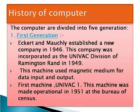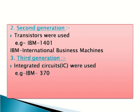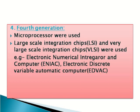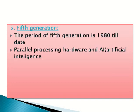History of computer. The history of computer is divided into five generations. In first generation computers, magnetic medium were used for data input and output, and punch cards were used as memory. In second generation, transistors were used. In third generation, integrated circuits or ICs were used. In fourth generation, microprocessors were used. Fifth generation computers are still under research and development, with parallel processing hardware and artificial intelligence being enhanced.